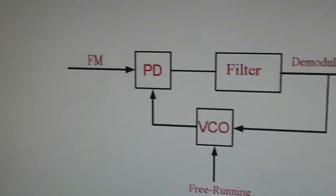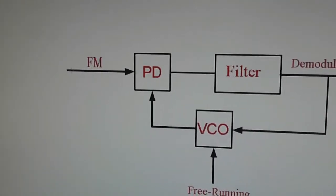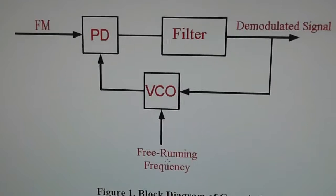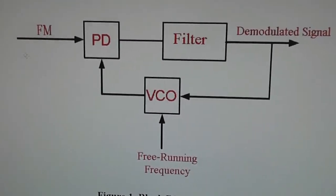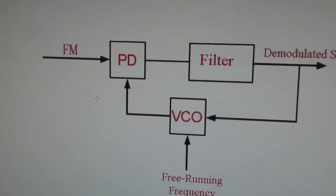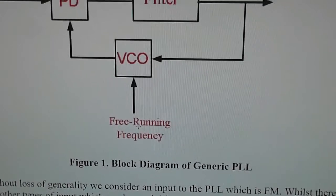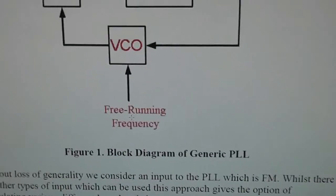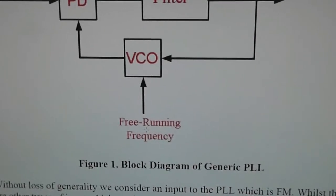Instead of FM, if you just consider a sine wave going in here where it says FM, then the free running frequency must be set up for that nominal frequency that's going in here. For example, if this was a kilohertz going in, this would have to be a kilohertz at the free running frequency. If this was 10 megahertz, then the free running frequency is 10 megahertz, and so on.